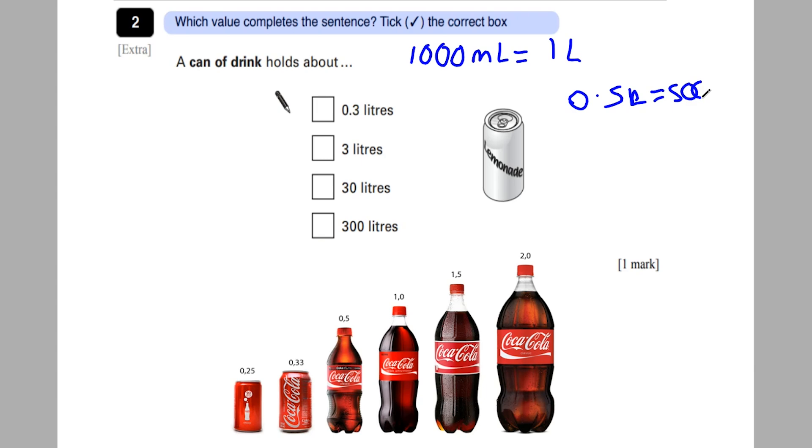So it's about the children having an understanding of a can of drink, which I'm sure they've had in the past and think about how much liquid this holds. Well, if we look at this 0.3 litres is roughly 300 millilitres, which is similar to half a litre, 500 millilitres. Three litres would be 3000 millilitres. 30 litres would be 30,000 millilitres. And 300 litres would be 300,000 millilitres.